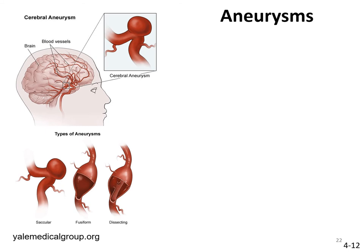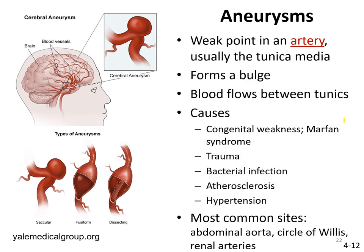Another type of blood vessel abnormality is an aneurysm. An aneurysm is defined as a weak point in a vessel wall, usually in an artery, where when blood enters that vessel the wall bulges and allows blood to flow from the lumen into the wall of the vessel. Blood flows in between layers of the vessel wall, usually between the tunica media and the tunica interna, but it can progress to the next two layers as well. The biggest danger is if pressure builds in the aneurysm — the vessel can rupture and cause hemorrhage.